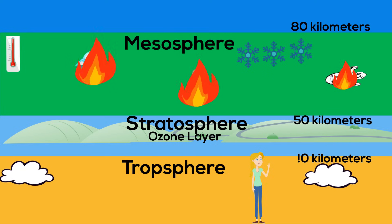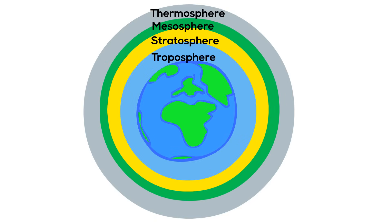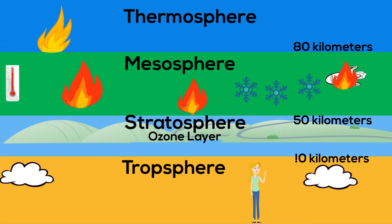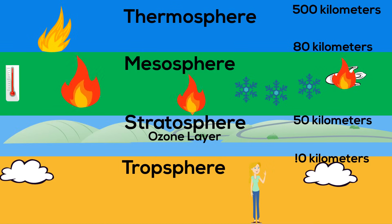And finally you have the thermosphere that is very hot. In fact it is the hottest layer and you can have temperatures between 500 and 2000 degrees Celsius. It extends 500 kilometers into the air. The thermosphere has two layers.